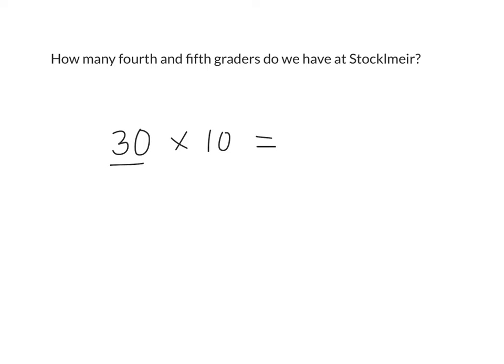We could do that quickly in our head, because we can think of this as 3 tens times 1 ten. What's 3 times 1? 3. If I do 10 times 10, that's in the what? 100. So if I estimate in my head, thinking there's about 30 kids in each class, and there's about 10 classes, that's about 300 4th and 5th graders.